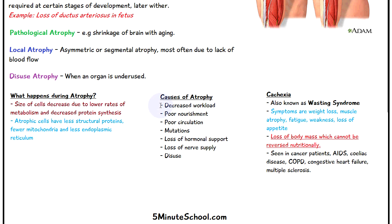The causes of atrophy are various, but the main ones are: decreased workload, poor nourishment, poor circulation, some form of mutation, loss of hormonal support, loss of nerve supply, and disuse.